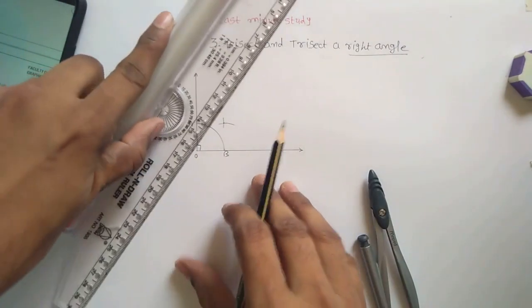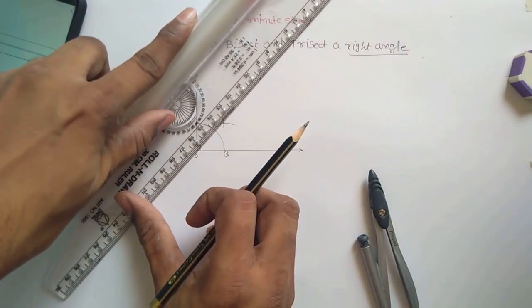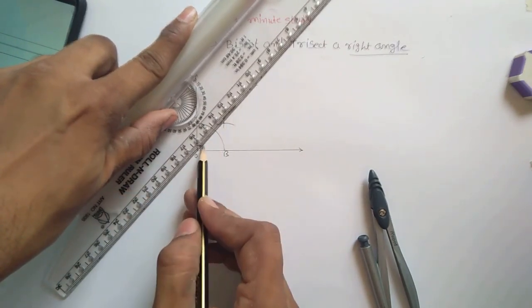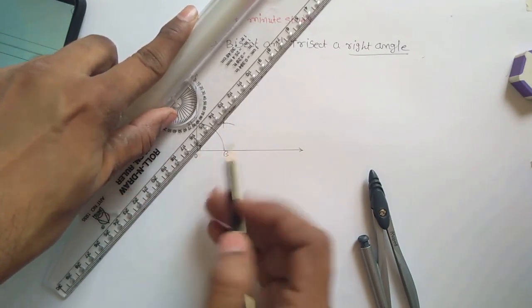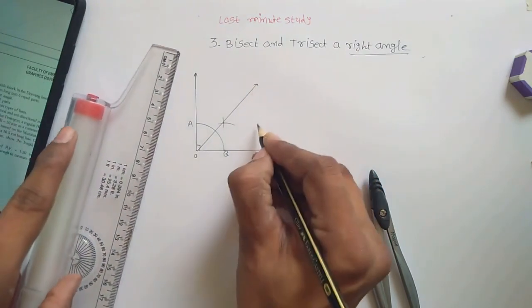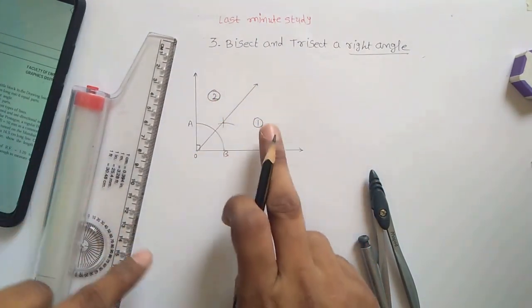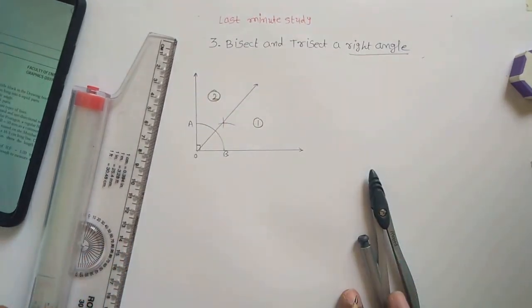Now using a ruler scale, join these intersecting points with the origin. So this is part number one and this is part number two. So you bisect this into two equal parts. Same way, trisection is also similar.